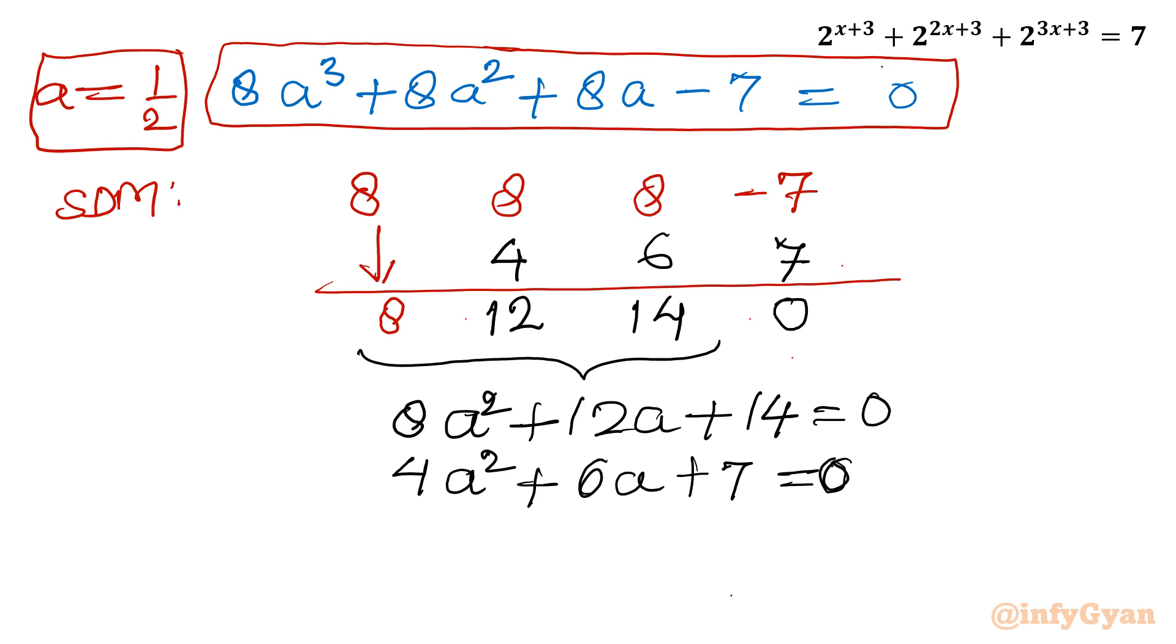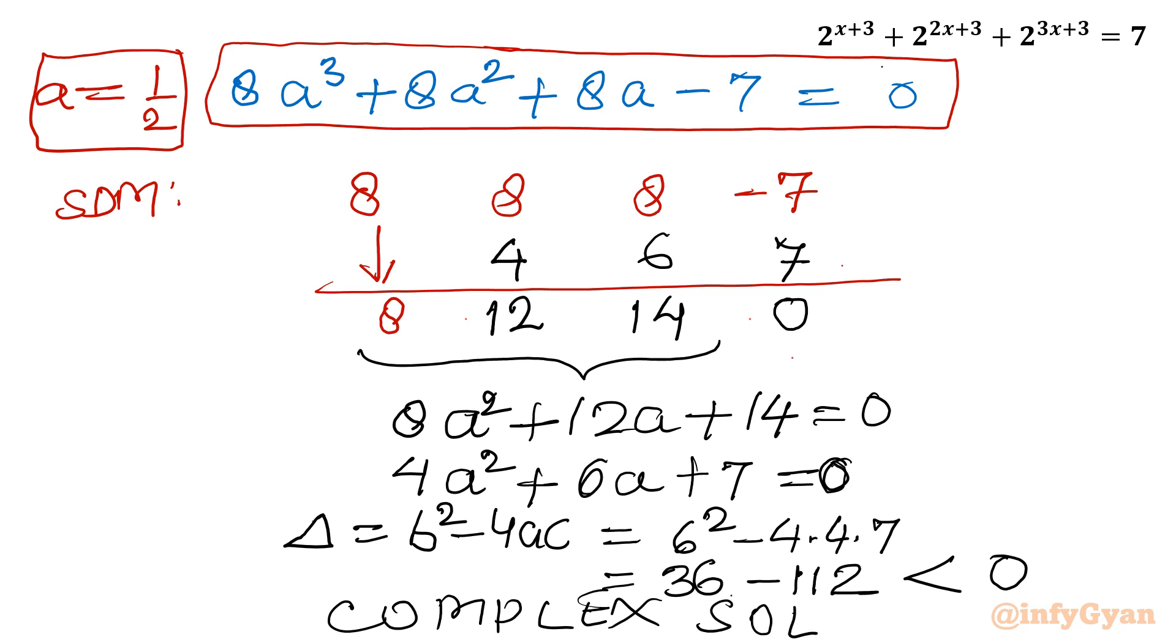So let me find out the remaining two solutions. How we will find out? Let us calculate delta discriminant separately: b^2 - 4ac. So what is b? 6. 6^2 - 4·4·7. So if I will write this value, then this is 36 - 16·7 = 112. So this value is coming out negative. Once discriminant is negative, complex solutions. So no need to calculate roots further as they will come out complex valued solutions. So we will reject this. So which solution is accepted? That is a = 1/2, our base solution.